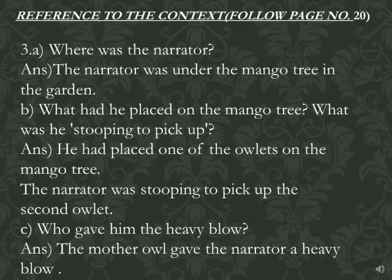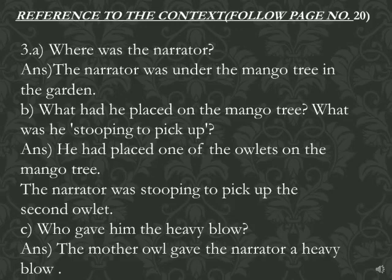3B: What had he placed on the mango tree? And the connected question: What was he stopping to pick up? Remember, children, when you see two questions in the same question, you have to change the paragraph for the other question. Answer: He placed one of the owlets on the mango tree. For the second part: the narrator was stopping to pick up the second owlet.